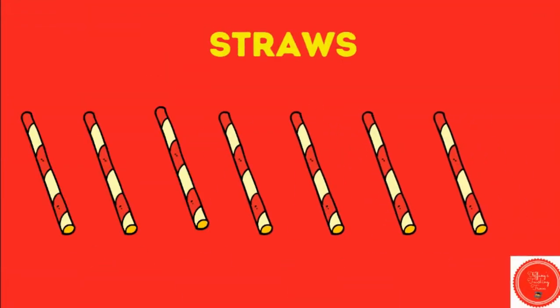Regrouping. Today we have seven straws, and we're going to get to make a group once we have ten. So if we have seven, how many more do we need to make ten? Let's count on. So we have seven, eight, nine, ten. We need three more straws, and then we'll be able to make a group of ten.